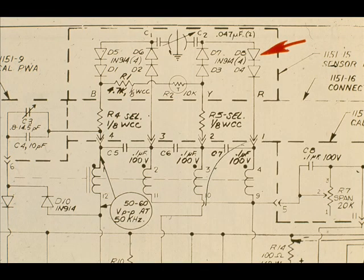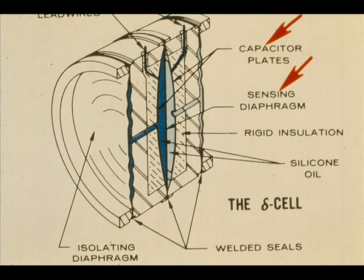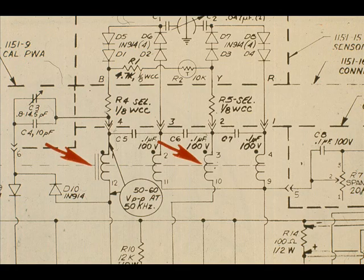The variable 50 kHz signal is demodulated by an eight-diode bridge rectifier — the diodes are D1 through D8 on the schematic. The output currents from the rectifier are related to the difference in capacitance between the sensor and the plates. Two of the output currents are algebraically summed, and the net current is directly proportional to the differential pressure.